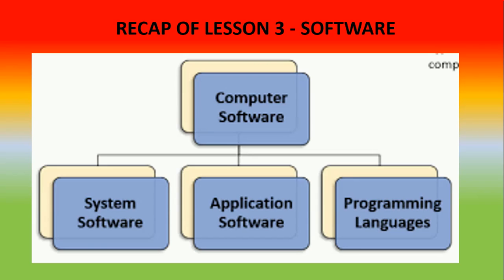Before starting this chapter we will revise our lesson number 3, i.e. Software. In the previous chapter we studied about different types of software. The first type was system software — software which are used to run the system. There are two types of system software: one is operating system and second is utilities. Operating system are the programs used to run the system; without it, the computer cannot work. Utilities are the programs used to maintain the hardware.